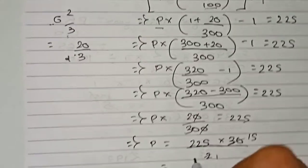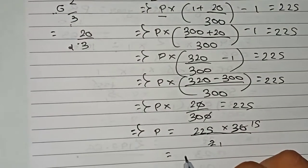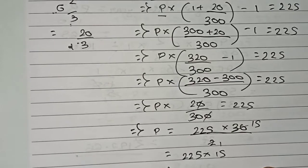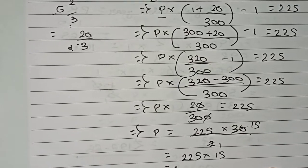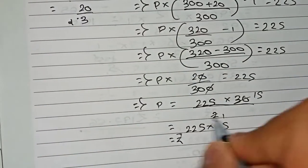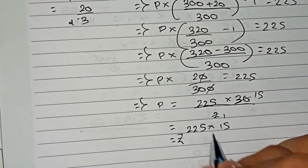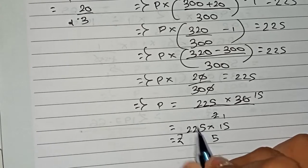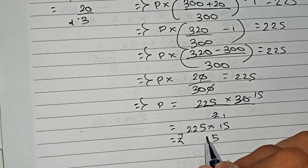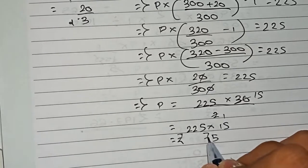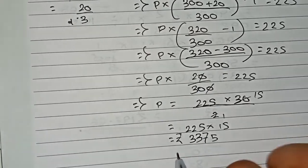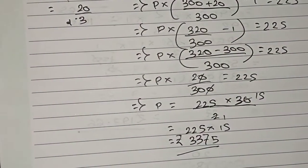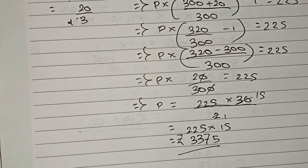Calculating 225 × 15: 5 × 15 = 75, carry 7; 2 × 15 = 30, plus 7 = 37; giving 3375. Therefore the original principal is ₹3375.